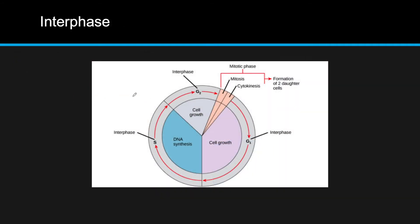Mitosis is broken down into a couple of different phases, but before mitosis even occurs, we need what is called interphase — basically where the cell grows and does its functions. Interphase includes everything that's not mitosis or cytokinesis, which is the process of actually dividing the cell.